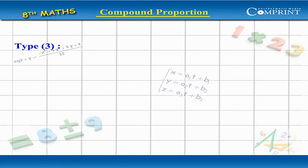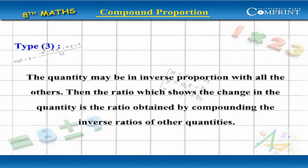Type 3: The quantity may be in inverse proportion with all the others. Then the ratio which shows the change in the quantity is the ratio obtained by compounding the inverse ratio of the other quantities.